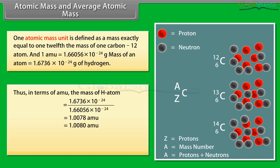Thus, in terms of amu, the mass of the H atom equals 1.6736 × 10⁻²⁴ divided by 1.66056 × 10⁻²⁴, which equals 1.0078 amu, approximately 1.0080 amu.